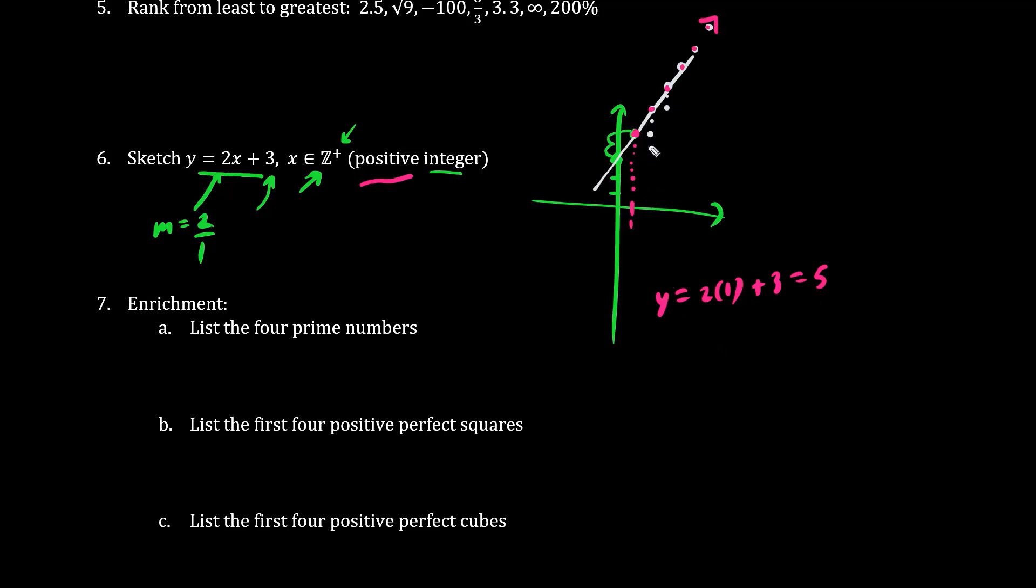And the next integer would be when x equals 2. y equals 2 times 2 plus 3, which is 7. And we keep going up by 2s: 5, 7, 9, 11, etc.